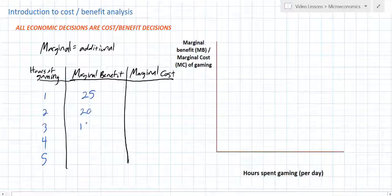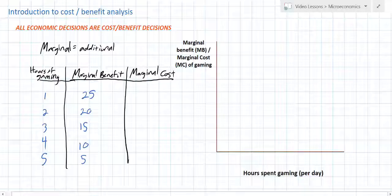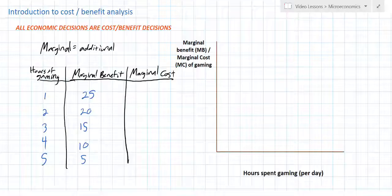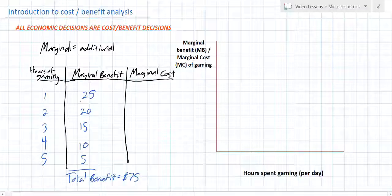I don't enjoy the third hour as much, so I only get $15 of enjoyment out of it. The fourth hour I also don't enjoy as much — I'm getting a little tired of games. And the fifth hour, I'm only going to place a $5 value on. Overall, I'd be willing to pay $25 plus $20 plus $15 plus $10 plus $5, for a total benefit of $75 for five hours of gaming on a Sunday afternoon.